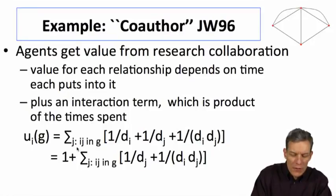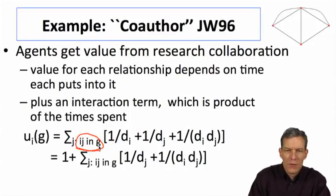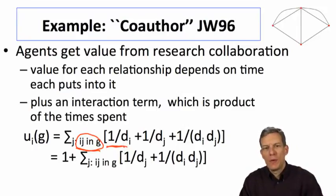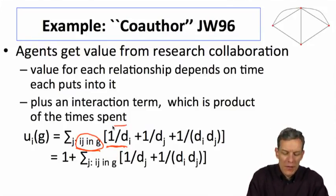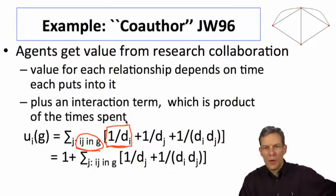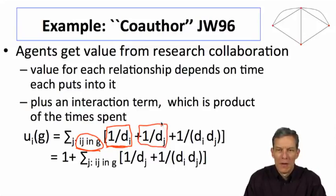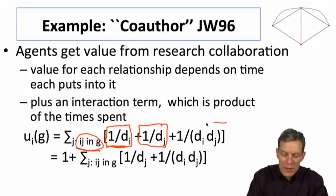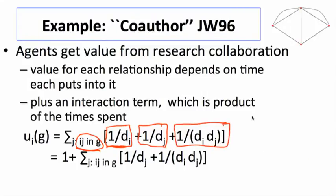For each relationship in the network, a given individual gets one over their degree. So if I have four people I'm involved with, I spend one-fourth of my time with each of them. I also get a fraction of their time — if somebody I'm linked to has five relationships, I get one-fifth from them. The synergy term is proportional to one over D_I times one over D_J. If I spend all my time with somebody I get more synergy than if I spend one-quarter of my time, and I get something proportional to how much time they put in.